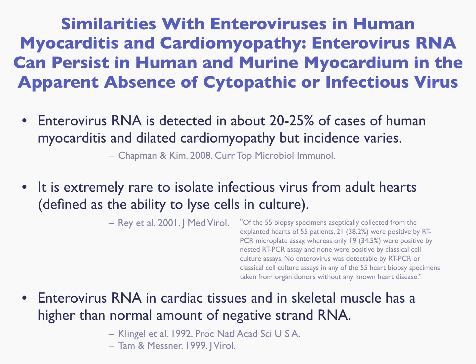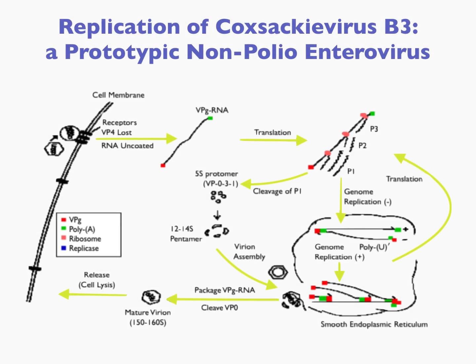enterovirus RNA is not the only cause. The frequency of its isolation or detection in cases varies a good deal — 20 to 25% is a frequently given percentage, but it varies from study to study. It's extremely rare to isolate infectious virus from adult hearts, even when enteroviral RNA is present in those hearts. If you do classical cytopathic assays, you don't detect it. And again, enterovirus RNA in cardiac tissues and in skeletal muscle has been shown to have a predominance of the anti-genome negative strand RNA at greater levels than are seen in lytic infections.